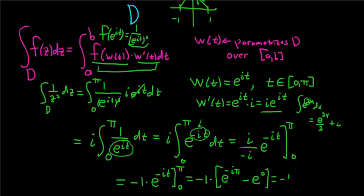This is equal to negative 1 times. Let's think about what e to the negative i pi is. So e to the negative i pi, that's going to be cosine of negative pi plus i sine of negative pi, using Euler's formula.